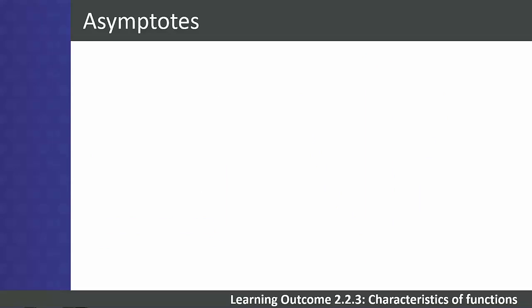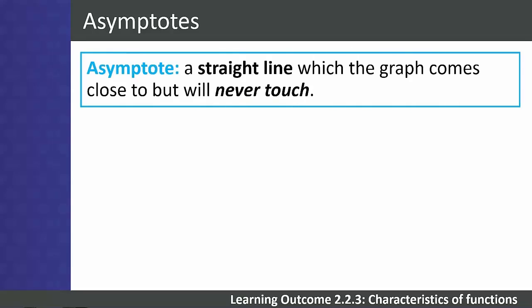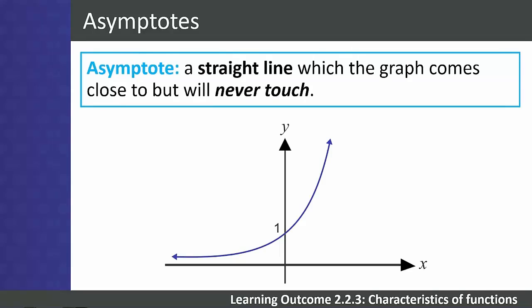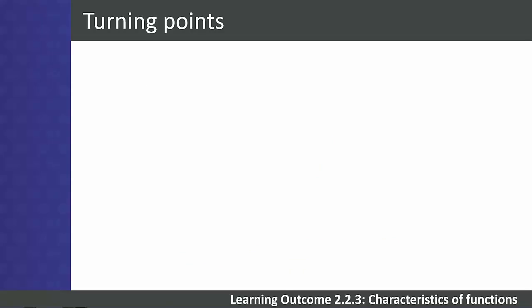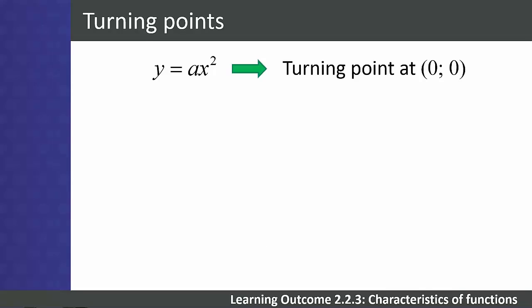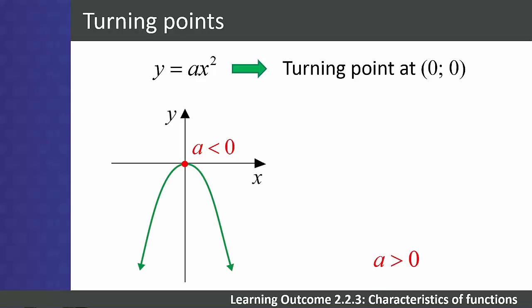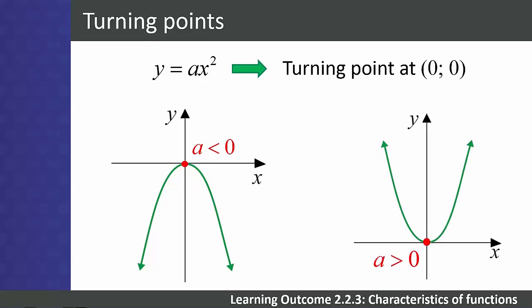Students should describe any asymptotes of a graph — a straight line to which the graph comes close but never touches. For the exponential function y = aˣ, the x-axis is the asymptote. The final characteristic is turning points, relevant only to the parabola at level 4. Working with y = ax², the turning point is at the origin. If a < 0, the graph has a maximum; if a > 0, it has a minimum turning point.